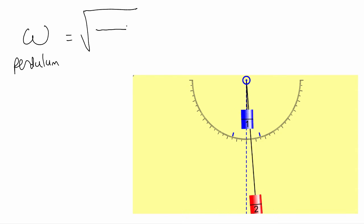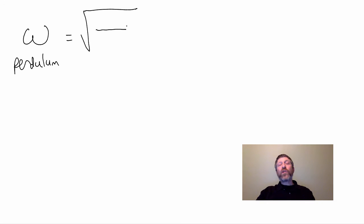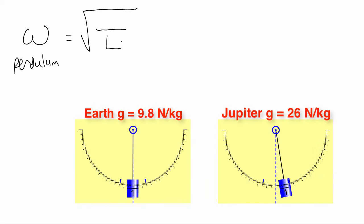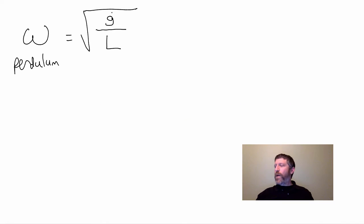So where does L go in this thing? The longer the string or the longer the distance from the axis or the pivot point to the center of mass, the lower the frequency. So this goes on the bottom. L goes in the bottom. The higher the acceleration of gravity, if you're on Jupiter, this pulls harder, basically goes faster. So it's g over L. There's our angular frequency for a pendulum.